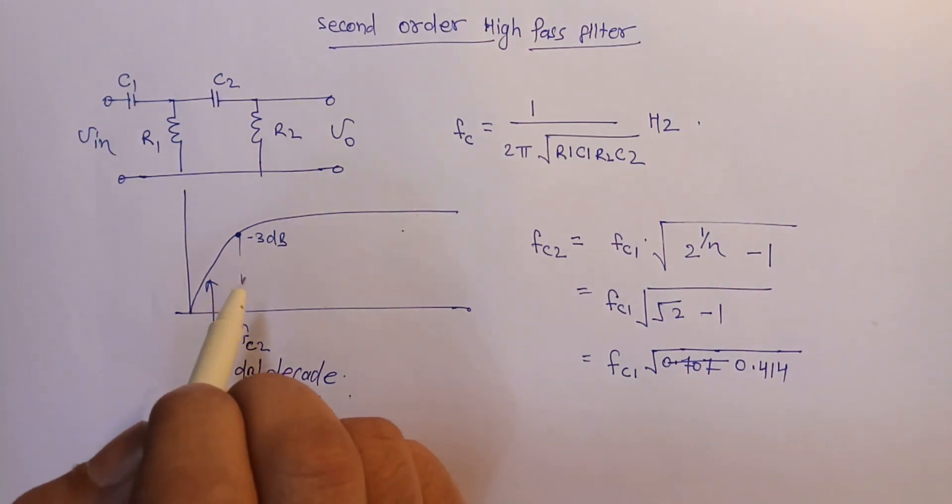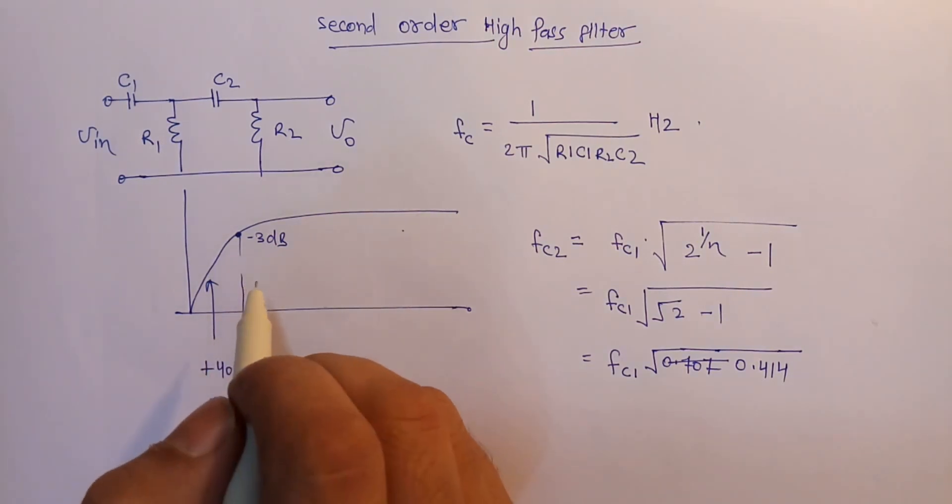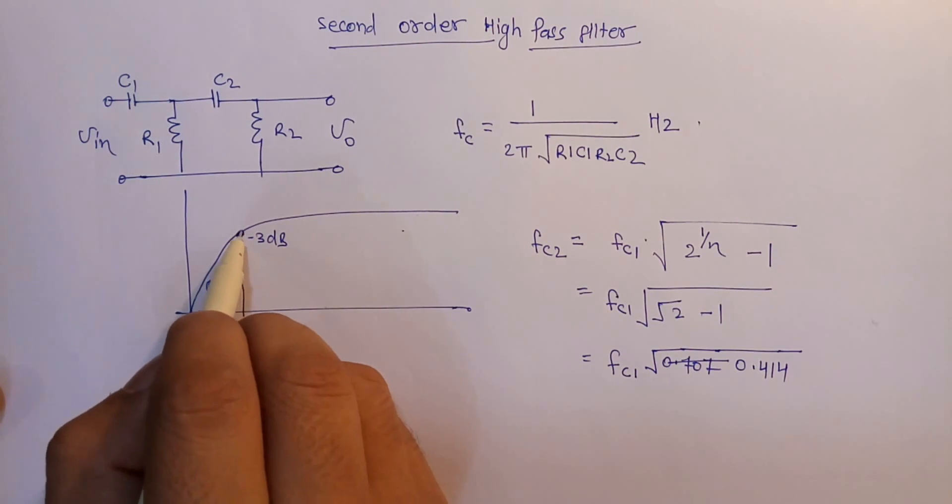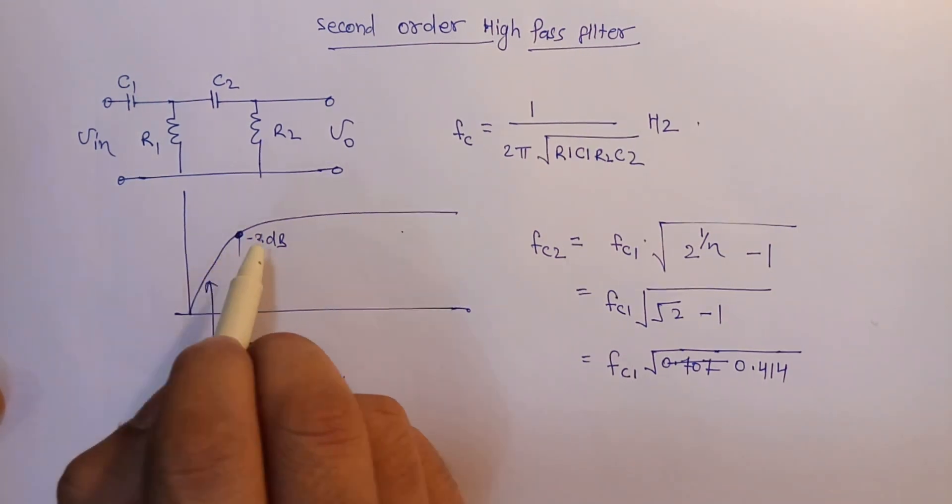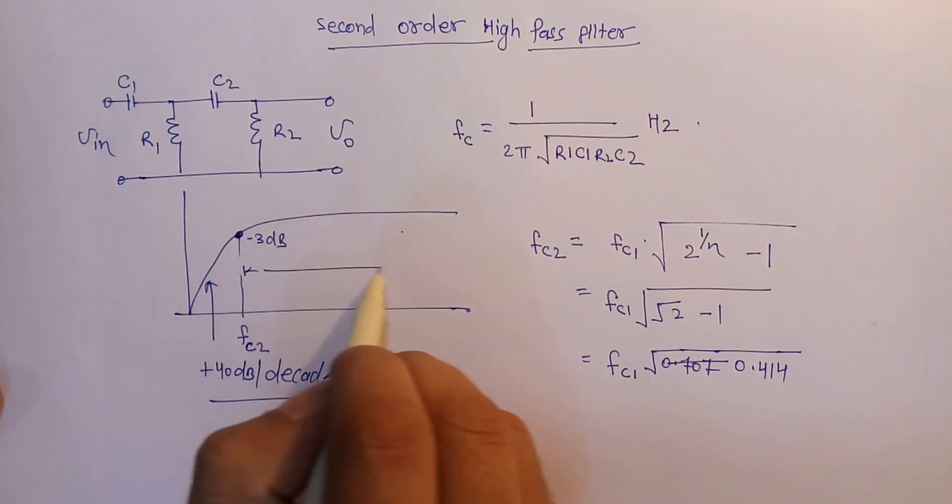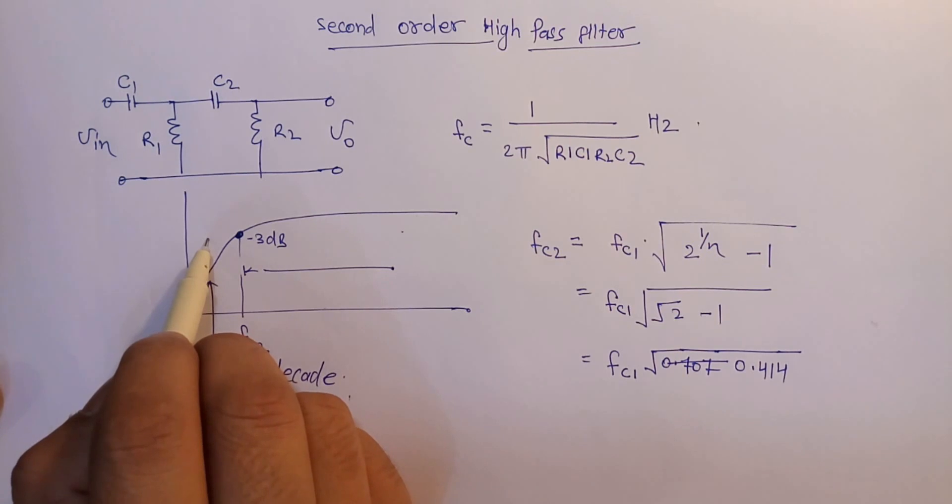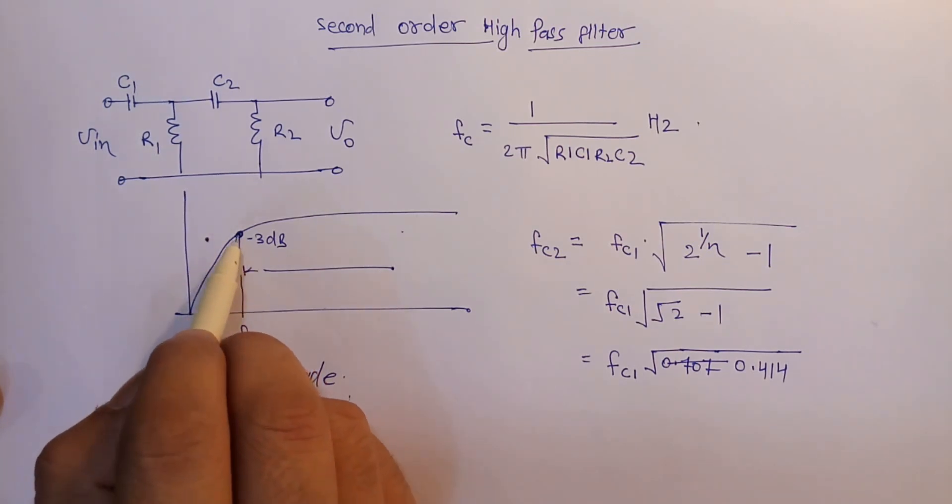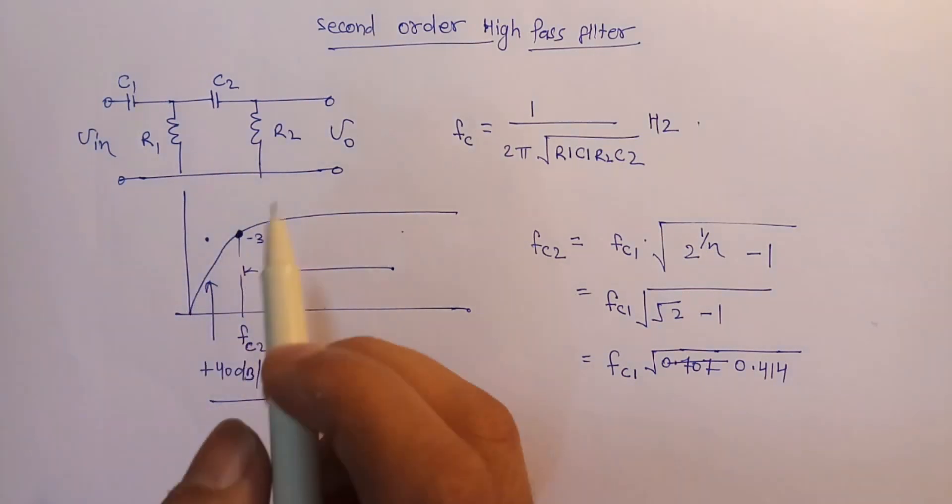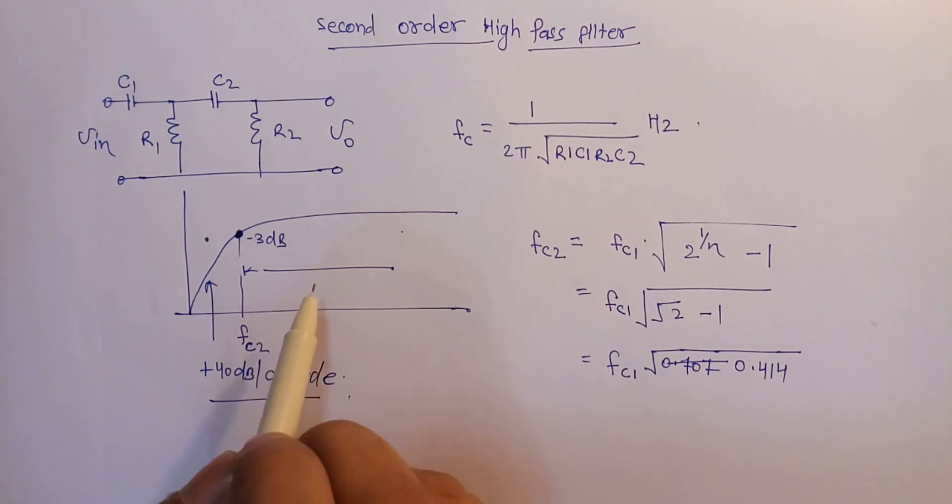So in summary, a high pass filter blocks the lower frequency components and it only passes the higher frequency components. This region is known as the stop band. At the minus 3 dB cutoff frequency, the reactance of the capacitance will be equivalent to the resistance, and the output will be leading the input by 0 degree to plus 90 degrees. But at the cutoff frequency, output will be leading by 45 degrees of the input. A very common